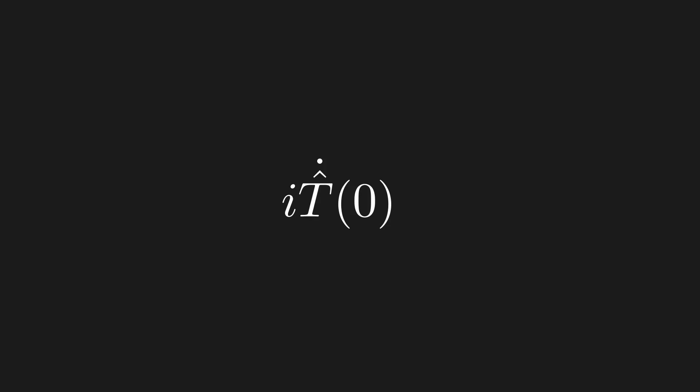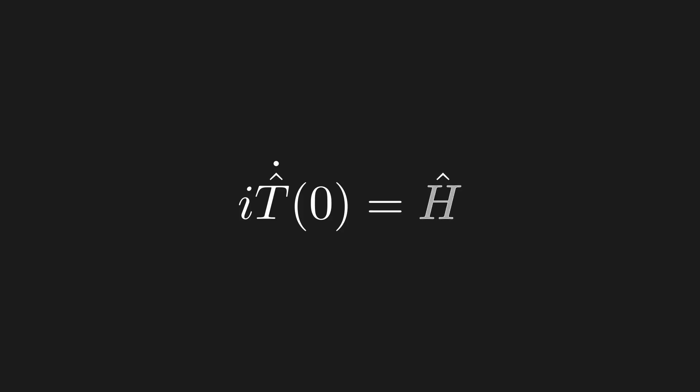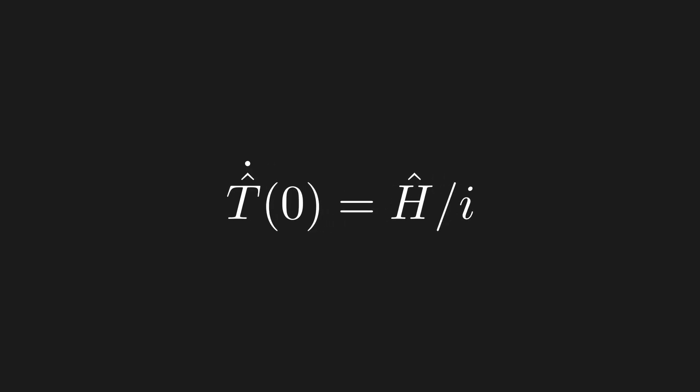Since the derivative of T is anti-Hermitian, if we multiply T-dot by i and then take the Hermitian conjugate, we get a negative sign from both i and T-dot which cancel out, giving us the exact same thing back. In other words, i times T-dot must be equal to some Hermitian operator. Moving the i over, we get the following equation for the derivative of T, where H is some yet-to-be-determined Hermitian operator.